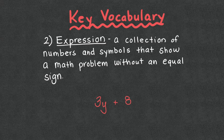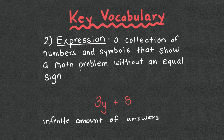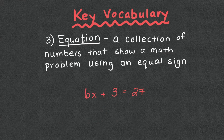Expressions are also known as having an infinite amount of possibilities, because for that variable we can put any number in and solve — so we have an infinite amount of answers. If no one's telling us what y is, we can just leave this as an expression. Number three, an equation is a collection of numbers that show a math problem using an equal sign.